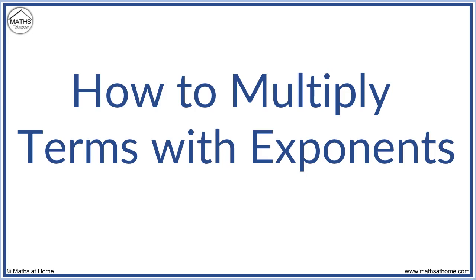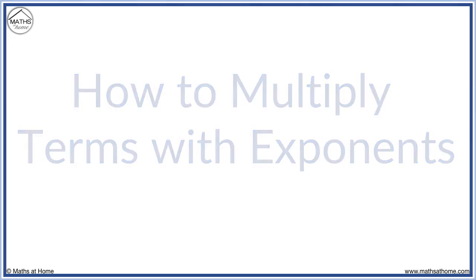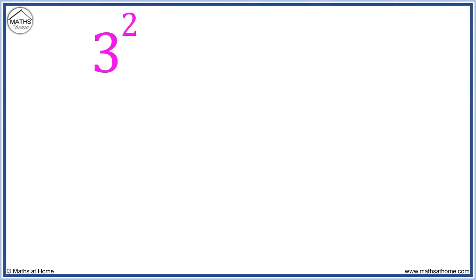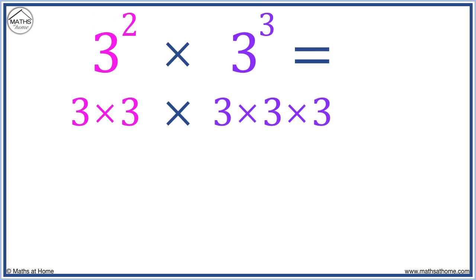In this lesson, we learn how to multiply terms with exponents. Here we have 3 squared times 3 cubed. 3 squared means 3 times 3, and 3 cubed means 3 times 3 times 3.